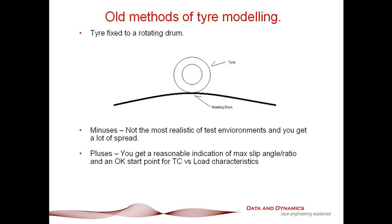The traditional methods of tyre modelling, circa about 10, 15, 20 years ago, involved a tyre fitted to a rotating drum. As shown in this illustration, the tyre is rotating at about 20k an hour and the drum is rotating at a similar speed. The minuses are it's not the most realistic test environment, due to the slow rotation speed and the contact patch not being flat on the ground. However, the pluses are you get a relatively good indication of peak slip angle, peak slip ratio, and a ballpark estimate for the traction circle radius versus load characteristic.